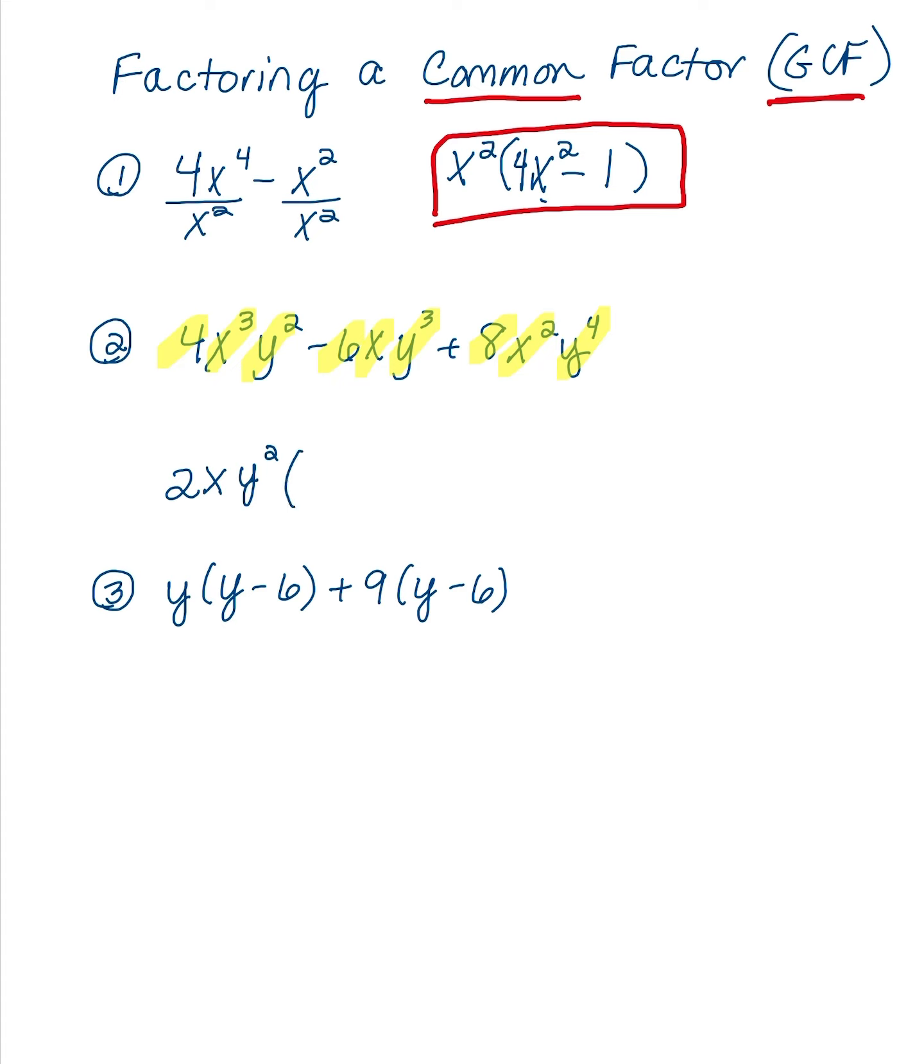Now to figure out what's left, here's where you want to divide this out of each term. So 4x cubed y squared divided by 2xy squared is 2x squared. And then minus, you've got your 6xy cubed divided by 2xy squared, which will be 3y. And then third, you want to take that 8x squared y to the 4 and divide out your 2xy squared, which will result in 4xy squared. And that is what's remaining.